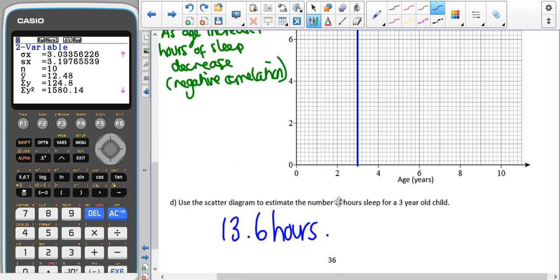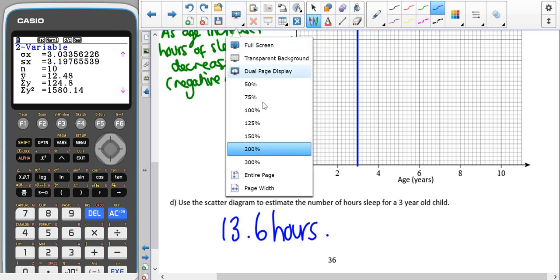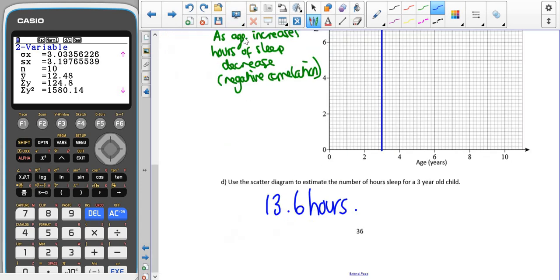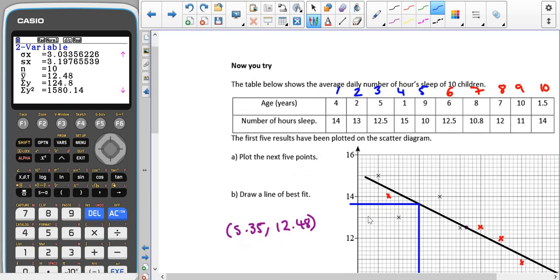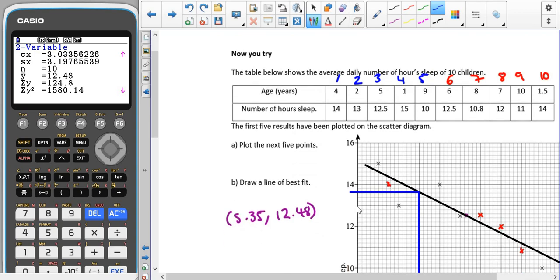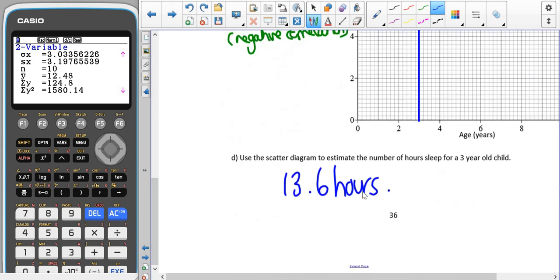And then we had to use our scatter diagram to estimate the number of hours sleep of a three year old child. You can see I've gone up from three until I hit my line, and then I went across. And if I just zoom back in, we can read off that that is 13.246, so 13.6 hours.